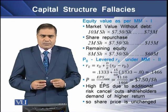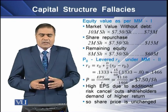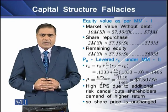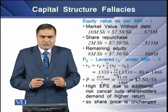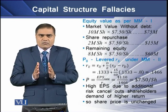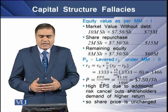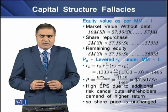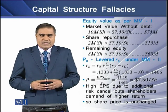To determine the price per share with the effect of leverage under MM Proposition 2, we first determine the cost of levered equity RE, which equals 14.67%. Using this cost of equity, we determine the price of the share to be $7.5 per share — the same as before leverage was introduced. The higher EPS due to additional risk has been cancelled by shareholders demanding higher returns, so there is no change in the share market price.